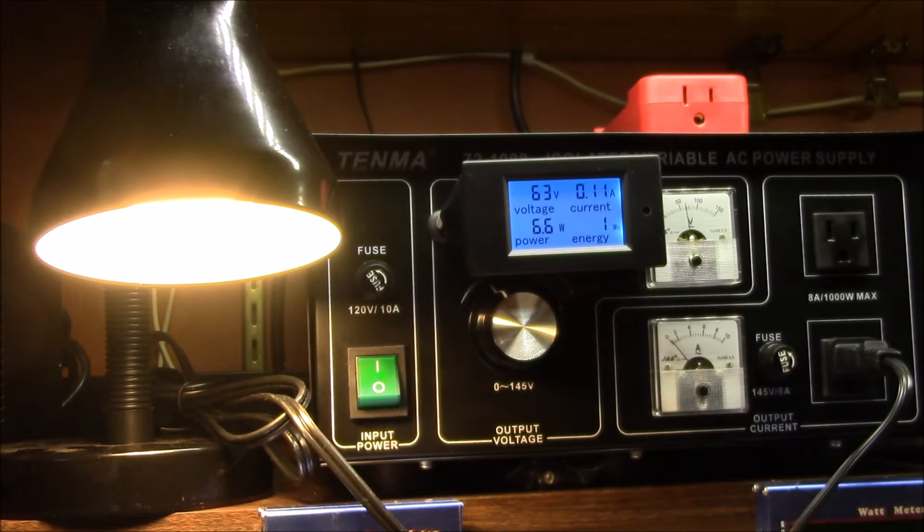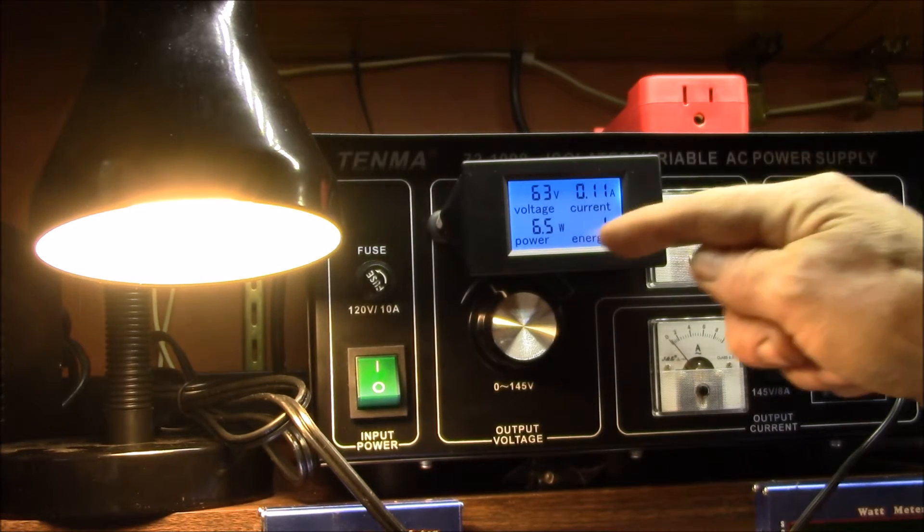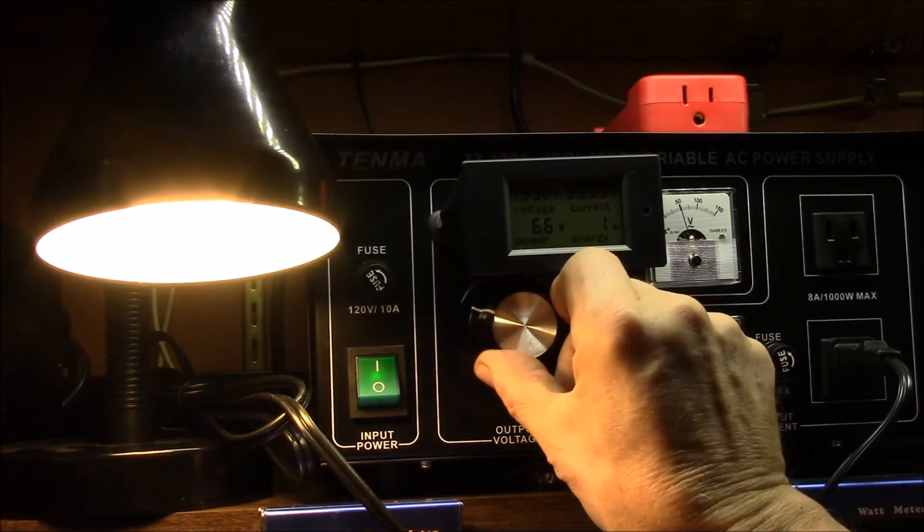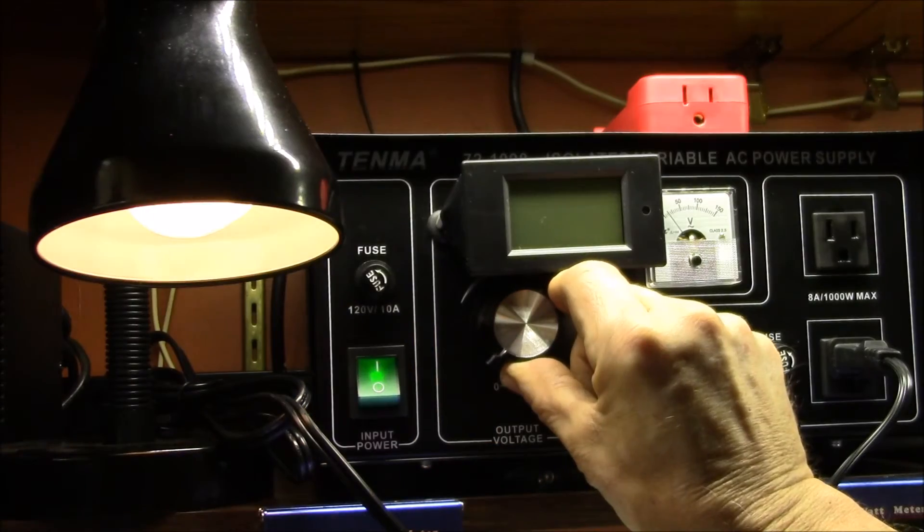So it appears to work by maintaining a constant input current and reducing the power to the LEDs in response to the lower input voltage. Electron Update has a teardown video of a similar bulb on his channel.